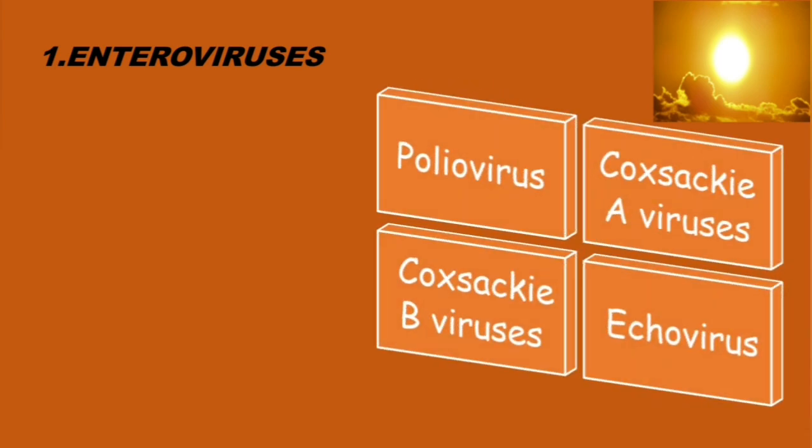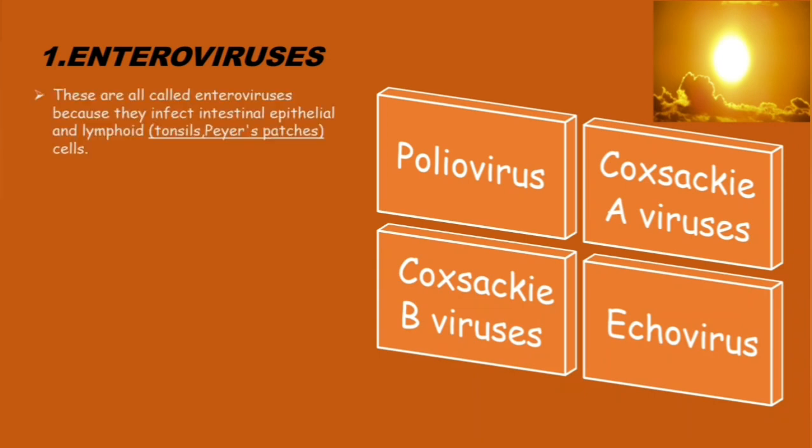As mentioned, in this video we're going to look at only three genera. We are starting with the enteroviruses: poliovirus, Coxsackievirus A and Coxsackievirus B, and echovirus.